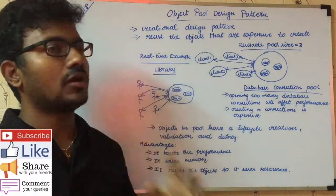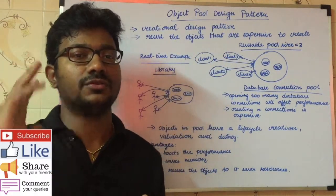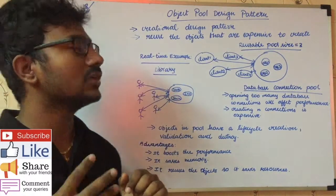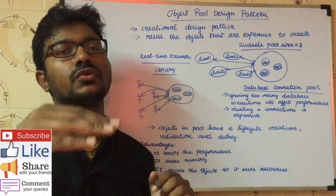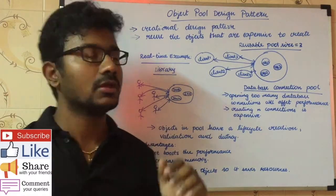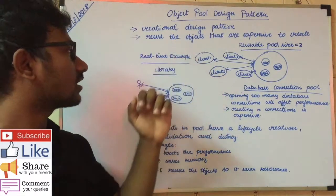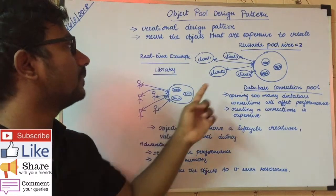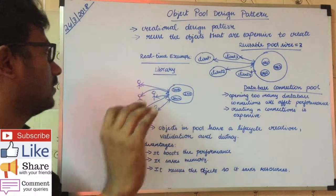This pattern applies only at the object creation time. The second key point is that it reuses objects that are expensive to create. This concept will be explained using a real-time example and a Java-oriented real-time example.